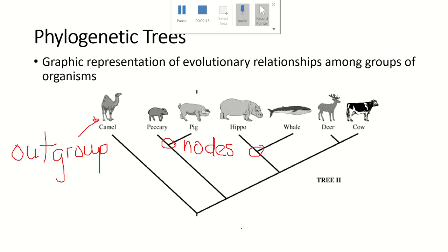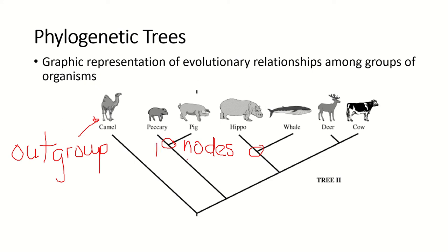To get from the pig to the whale, you have to go through four nodes. So the whale is much less closely related to the pig than it is to the hippo, where there's only one node between them. That's how you read a phylogenetic tree.